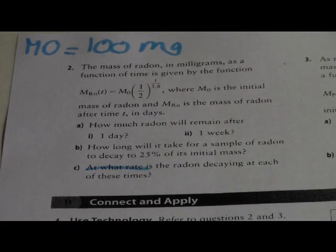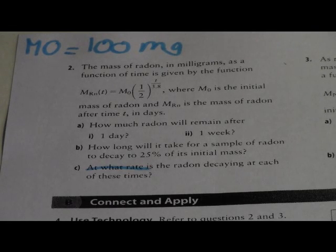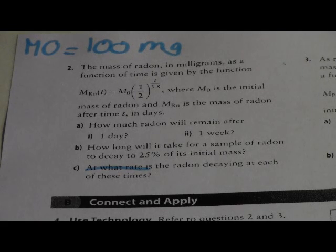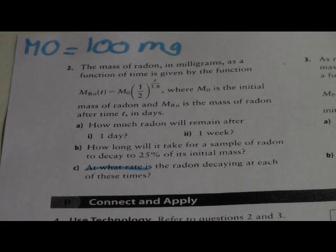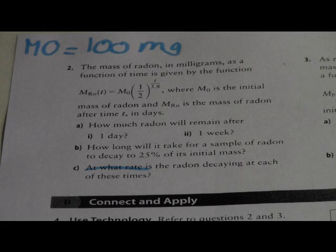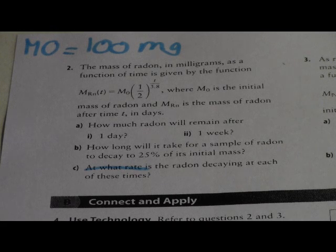For Part A, how much radon will remain after one day and one week — one day and one week are our time values. Using our equation with t in the exponent, we plug in t = 1 for one day, and t = 7 for one week, since time is measured in days and one week equals 7 days.